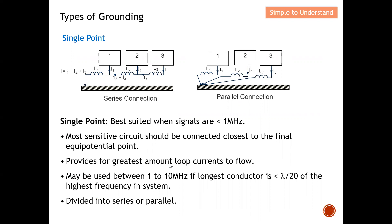Single point grounding provides for the largest amount of loop current to flow, because the circuit is specifically grounded onto one single point. It may be used between 1 to 10 MHz if the longest conductor is less than lambda over 20 of the highest frequency in the system. Anything longer than this, the ground potential can become a very high impedance, which we are going to take a closer look at.